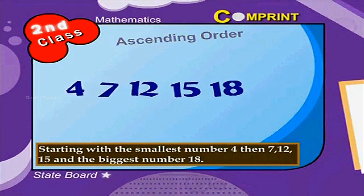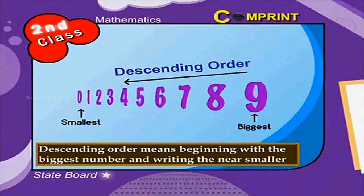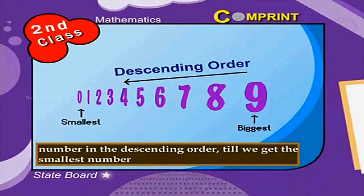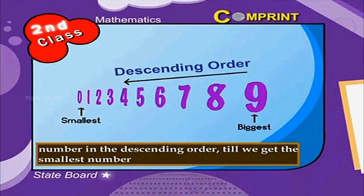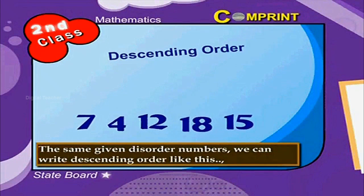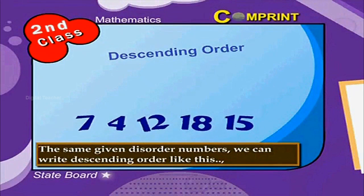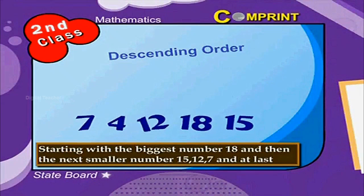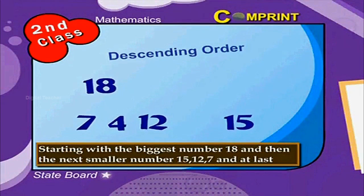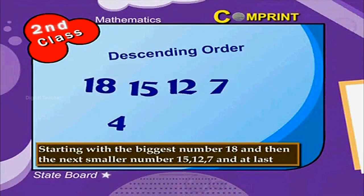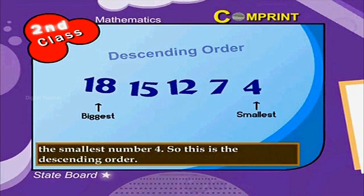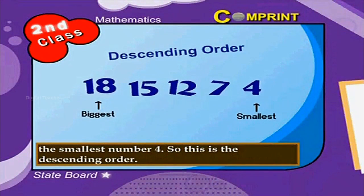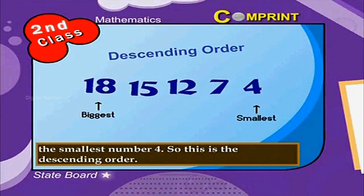Descending Order means beginning with the biggest number and writing the next smaller number in descending order till we get the smallest number. Using the same disordered numbers, we write the descending order like this: starting with the biggest number 18, then the next smaller numbers 15, 12, 7, and at last the smallest number 4. So this is the descending order.